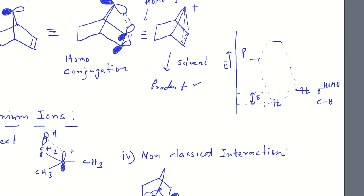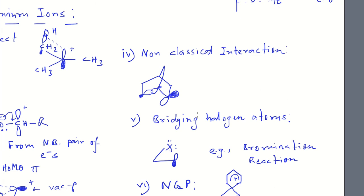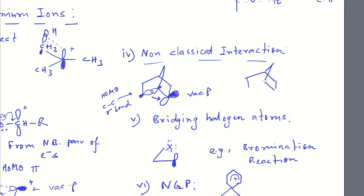Another stabilization is non-classical interaction: the HOMO of a carbon–carbon single bond interacts with the vacant p orbital of a carbenium ion, forming a non-classical carbonium ion. The classical carbenium center undergoes this interaction with the C–C sigma bond HOMO and becomes the non-classical carbonium ion.